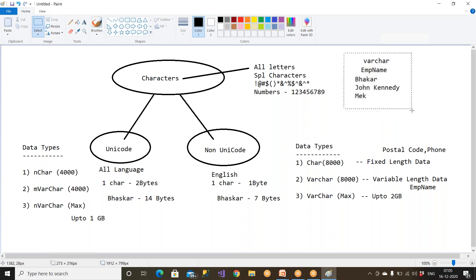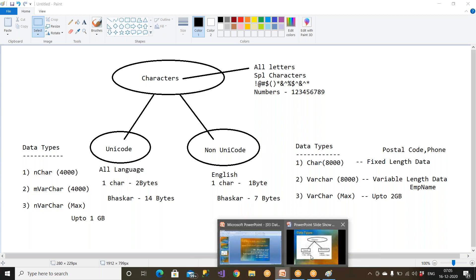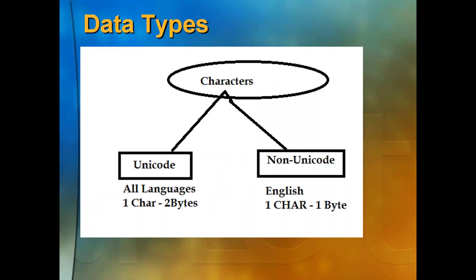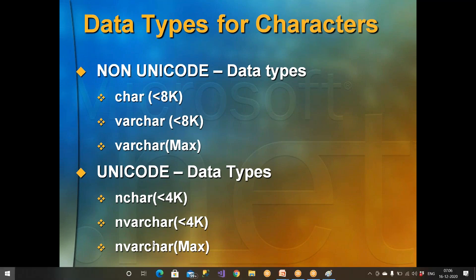Are there any questions? So these are the data types we have — Unicode data types and Non-Unicode data types. char supports up to 8,000, varchar also up to 8,000, varchar(max). For Unicode: nchar, nvarchar, and nvarchar(max).